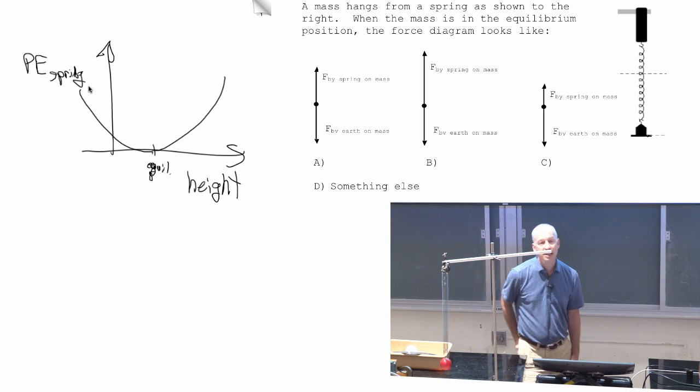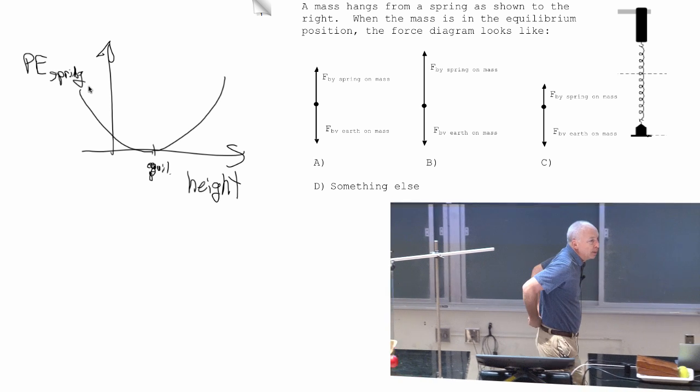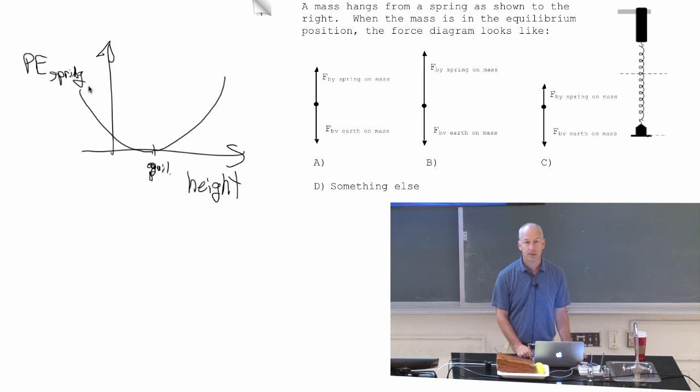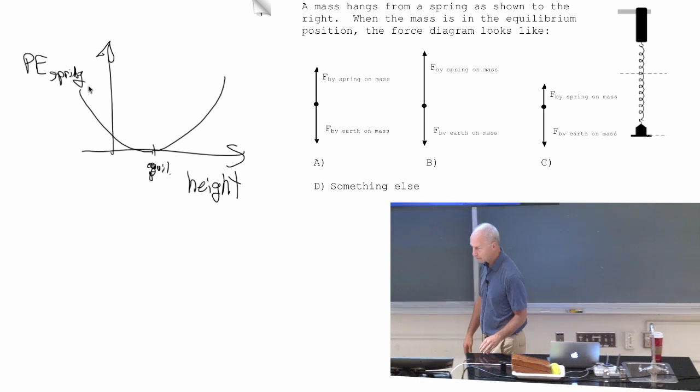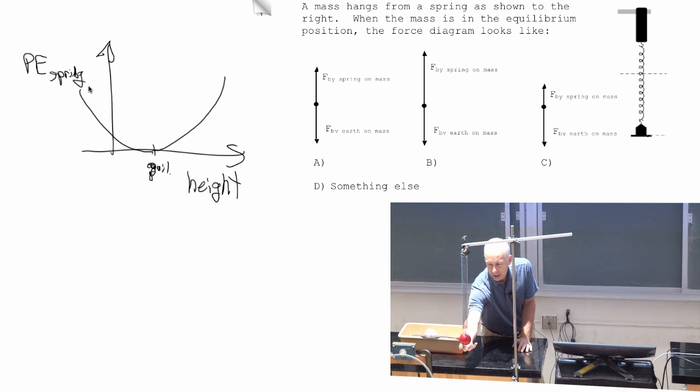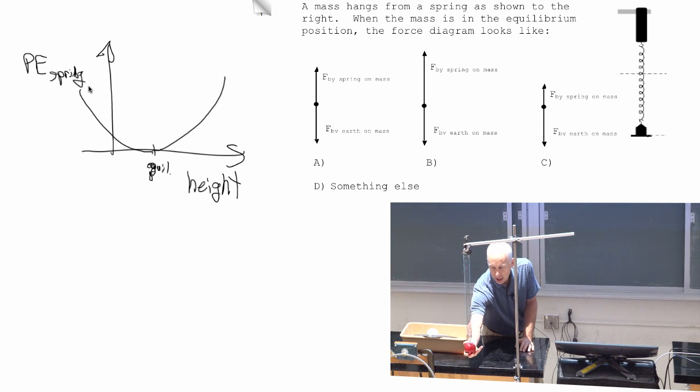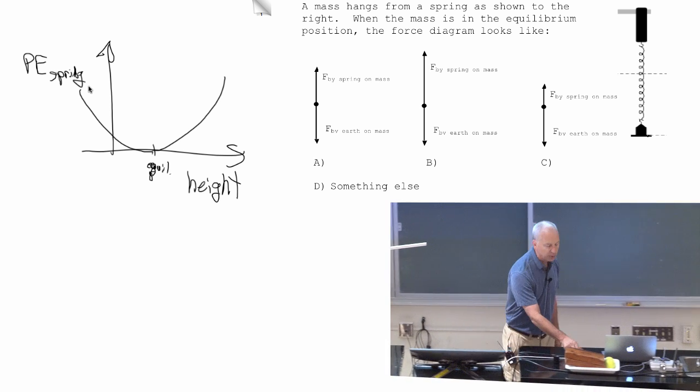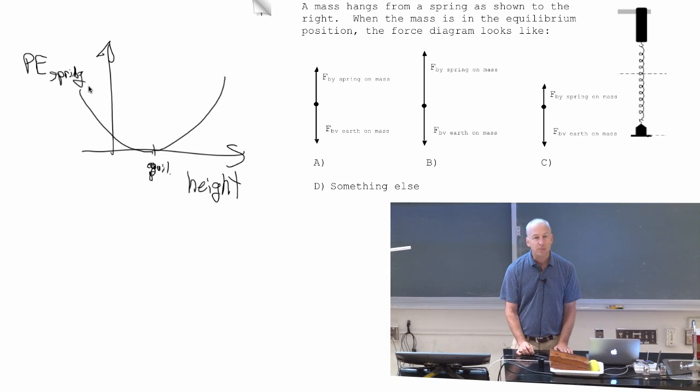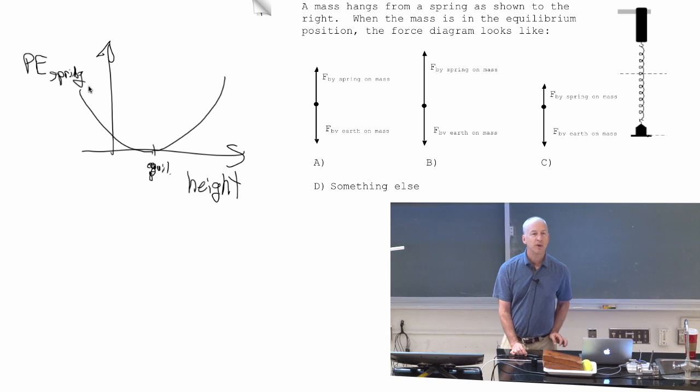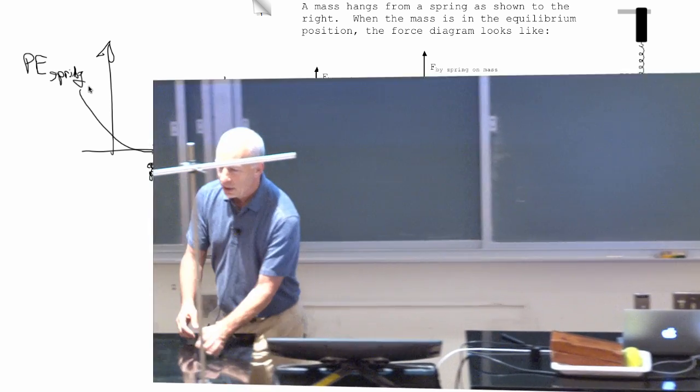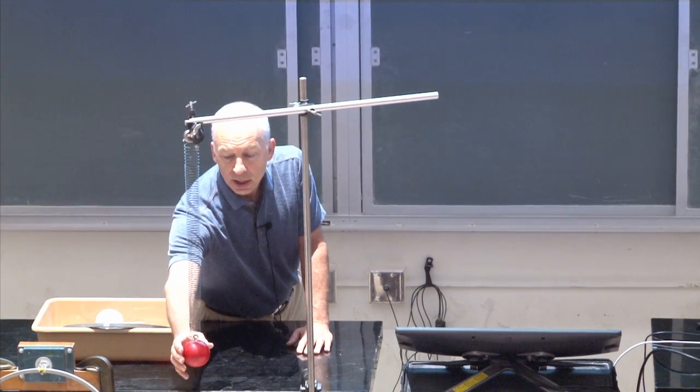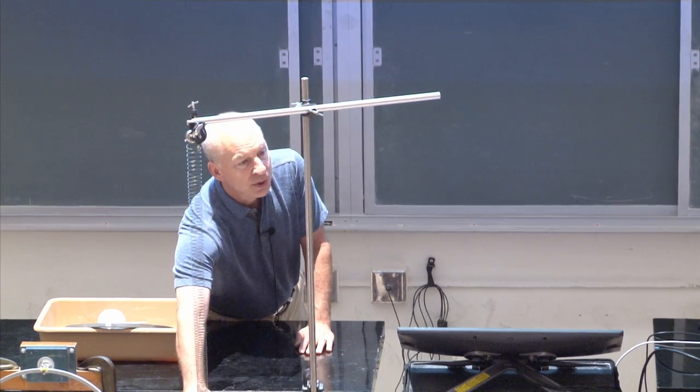Zero. The net force is zero. The force by the spring plus the force by the earth has to cancel, has to give you zero. The equilibrium point is the point at which there is no net force on it. And you use this diagram whether things were moving or not, because it doesn't matter whether things are moving or not. Forces have to do with the interactions. And the interaction with the earth is constant. The interaction with the spring depends on how much you've stretched it.